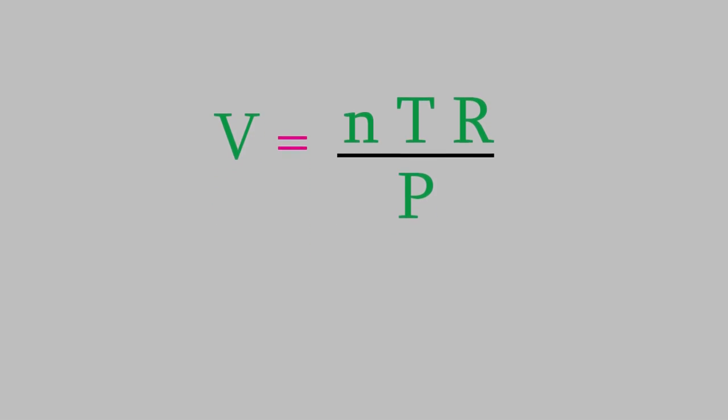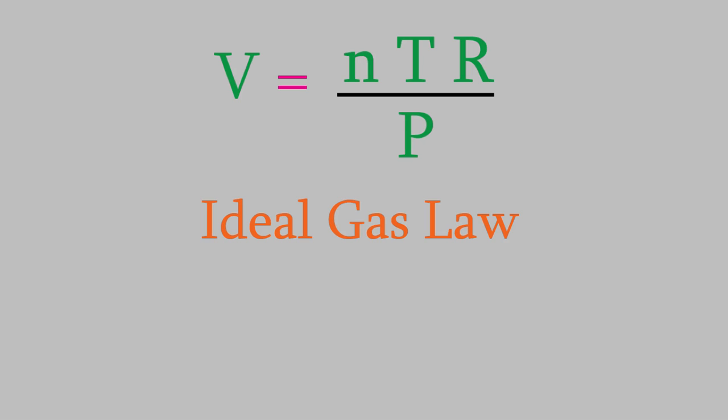Finally, notice that the volume is proportional to N times T over P, not equal to it. If we want the exact value of the volume, we get it by multiplying the number on the right by a constant. We'll use the letter R for that constant. Now this is one way of writing what's known as the ideal gas law. We usually write it slightly differently, though. We multiply both sides by P to get rid of the fraction and we put the R in the middle of the right side so that we get PV equals NRT.